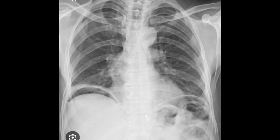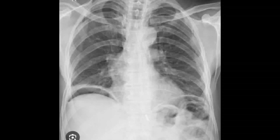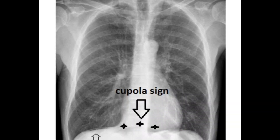Pneumoperitoneum can also be detected on the chest radiograph. A specific confirmatory sign is gas underneath the diaphragm. The cupola sign can also be appreciated — this is air arising within the abdominal cavity of supine patients that accumulates underneath the central tendon of the diaphragm in the midline, where the superior border is well-defined but the inferior margin is not.